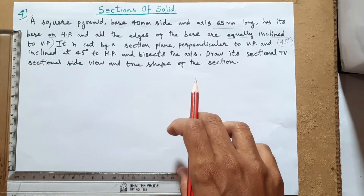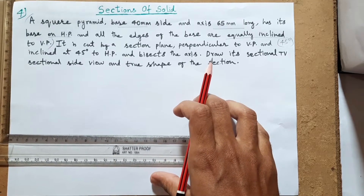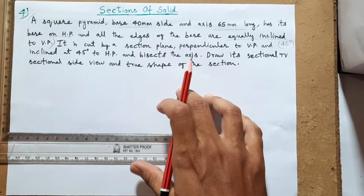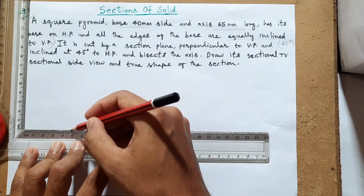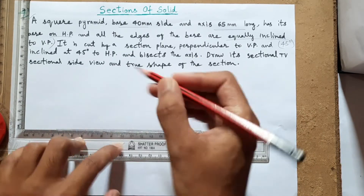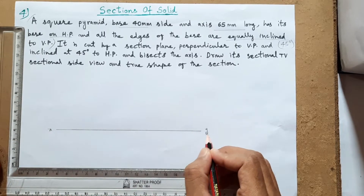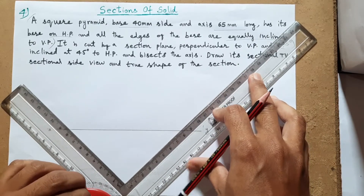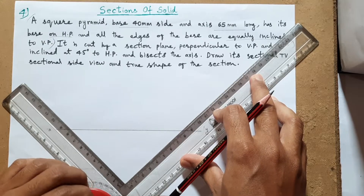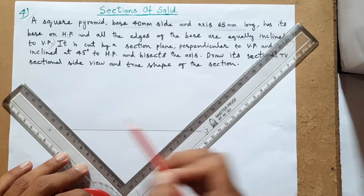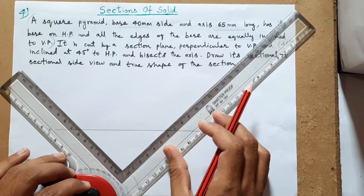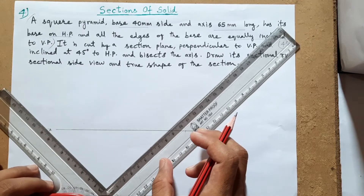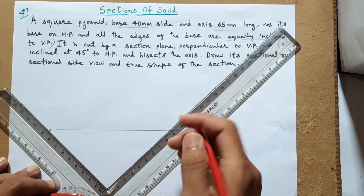Let us start the problem. First, I will draw the XY line. As I said, equally inclined means the top view will be drawn at 45 degrees for the edges of the square. Here I am setting it to 45 degrees - any equal numbers like 8-8 or 6-6 means the lines are at 45 degrees with respect to the horizontal line. So we will draw the top view of the base, which is 40 mm side.